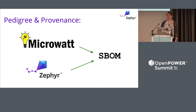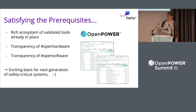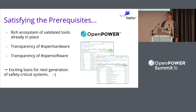Zephyr is going in this direction as well, and the two of them together seem like they might be satisfying their prerequisites. We've got a rich ecosystem of validated tools, there's the transparency of open hardware, and there's the transparency of open source software. So to me, it seems a really exciting basis for the next generation of safety-critical systems and embedded, and chances for people to be using Power again in the embedded space. Thank you.